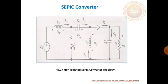Next topic: SEPIC converter. In general, the Cuk converter and buck-boost converter reverse the voltage polarity of the input voltage and cause large electrical stresses on components, leading to device failure. This is the drawback of the Cuk and buck-boost converters. The SEPIC converter rectifies both problems. In general, the SEPIC converter is a step-up or step-down converter that produces low harmonic content with a regulated output voltage. This is the basic circuit diagram.